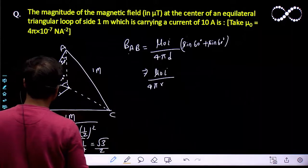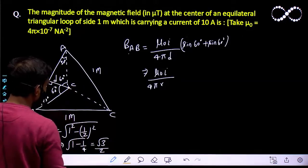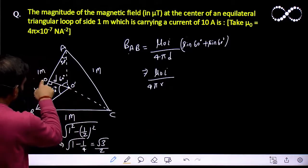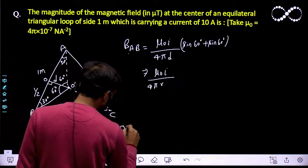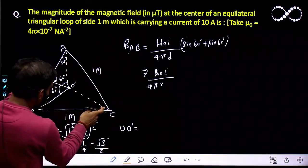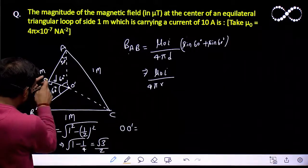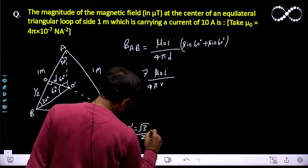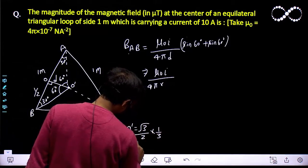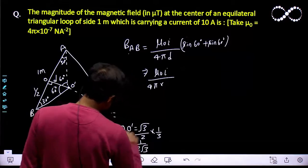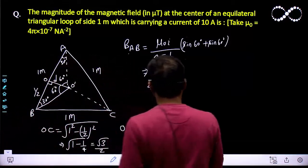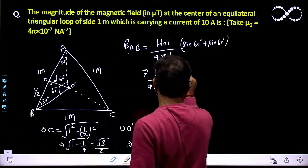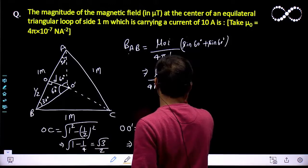This length OC is √3/2, and the centroid divides the median in ratio 1:2, so D equals one-third of this entire median length. So O to O' (which is D) equals (√3/2) divided by 3, which gives 1/(2√3). So this distance D equals 1/(2√3), or equivalently 2√3 in the denominator.